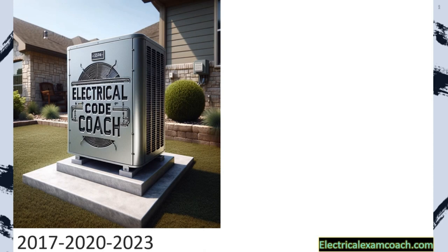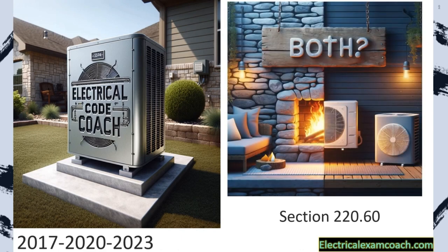Welcome back. I am the Electrical Code Coach from ElectricalExamCoach.com. Today we're going to be calculating HVAC VAs for heating, venting, and cooling. The only code we need to be familiar with is 220.60, which talks about non-coincidental loads. Usually in a typical house, you're not going to be running heating and cooling at the same time, so the code only requires us to count the larger of the two.